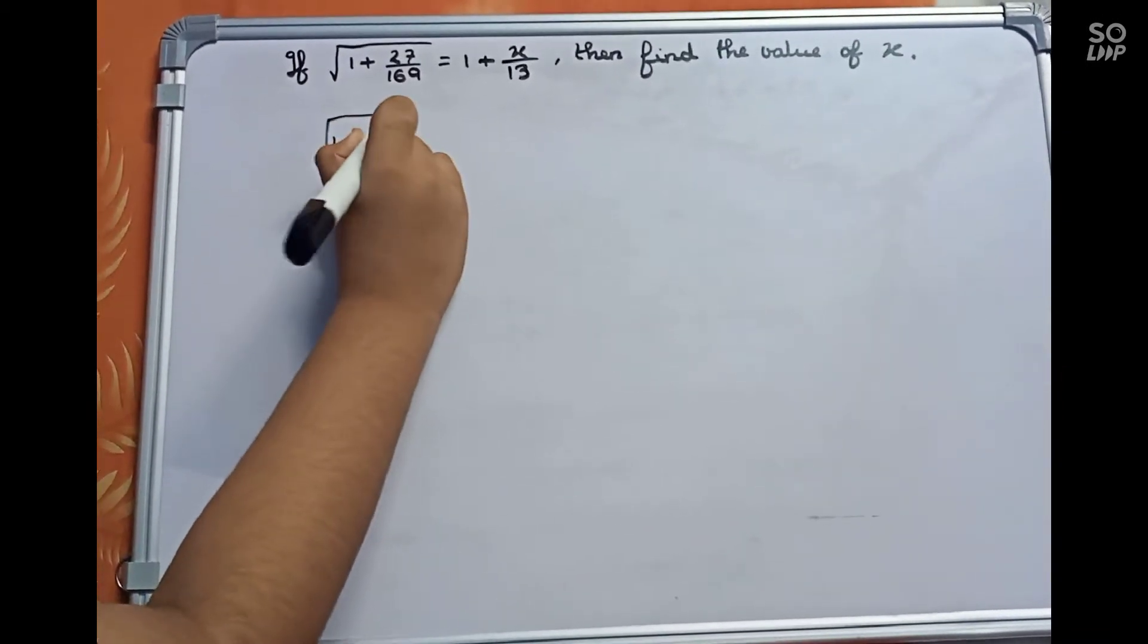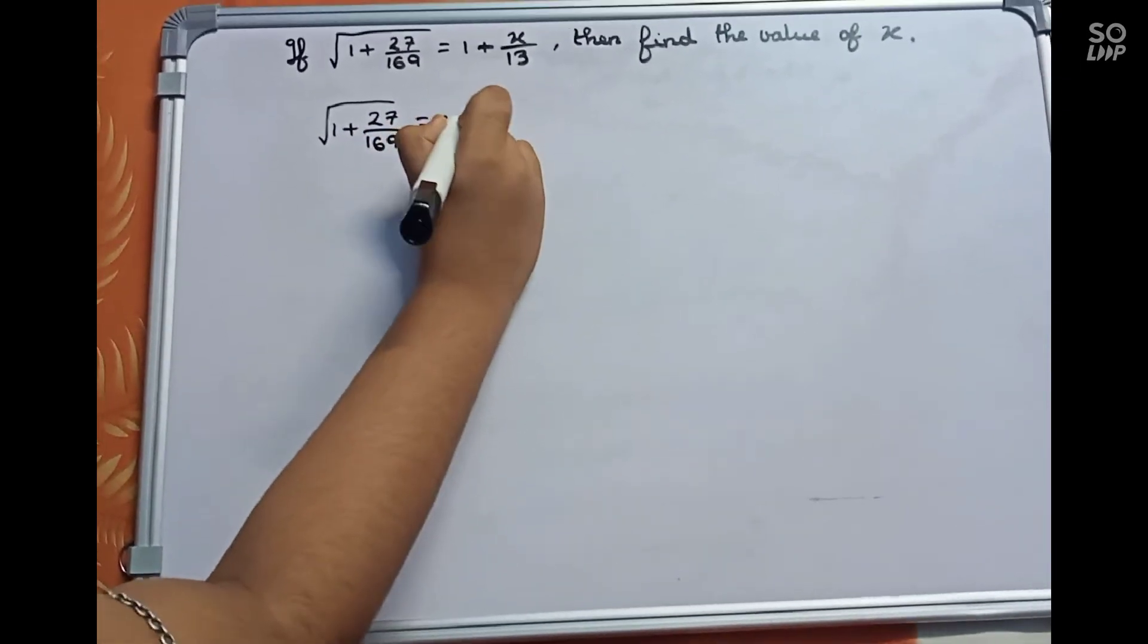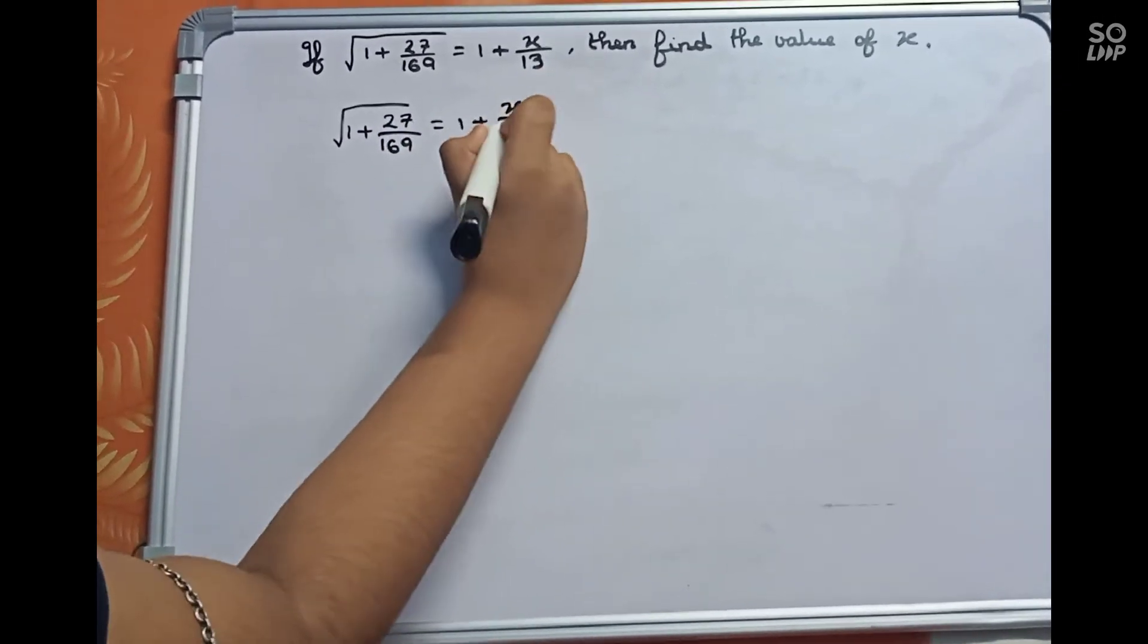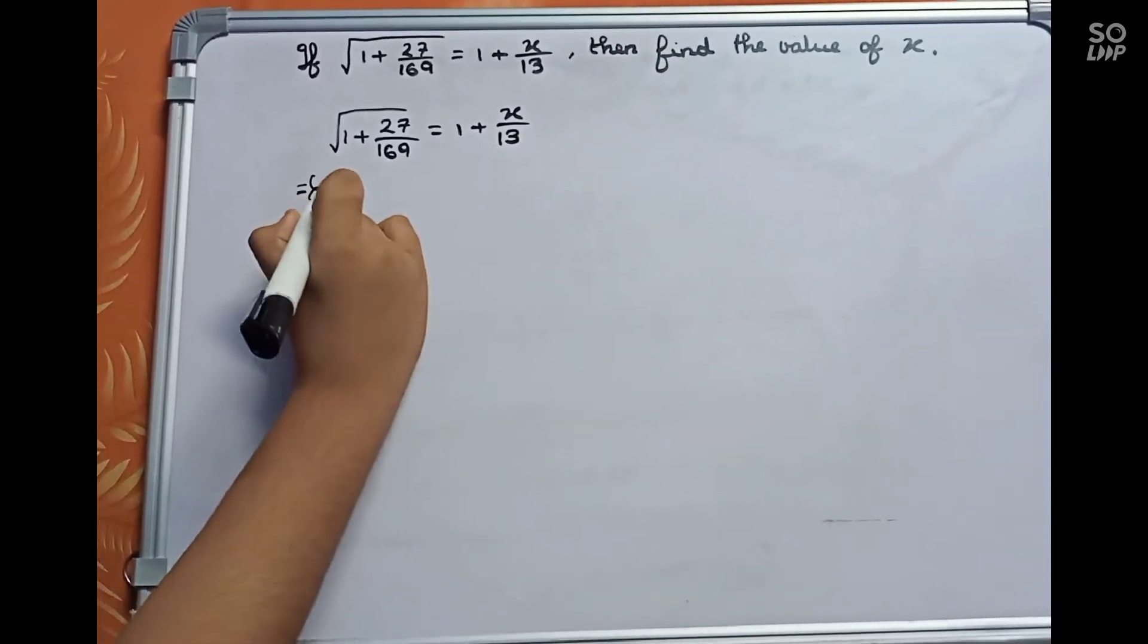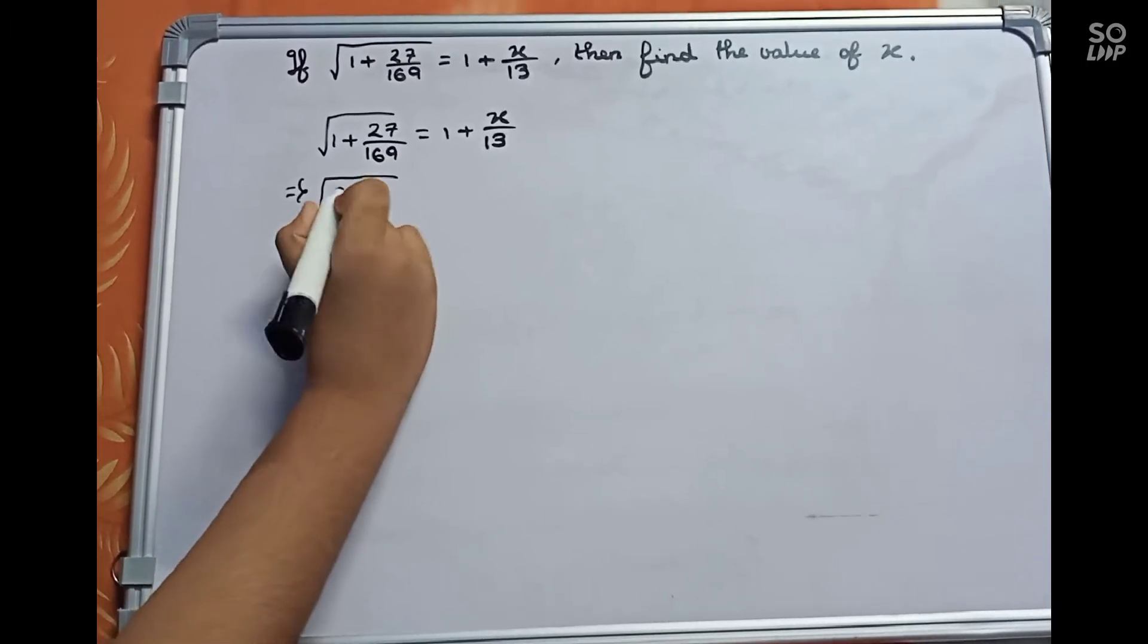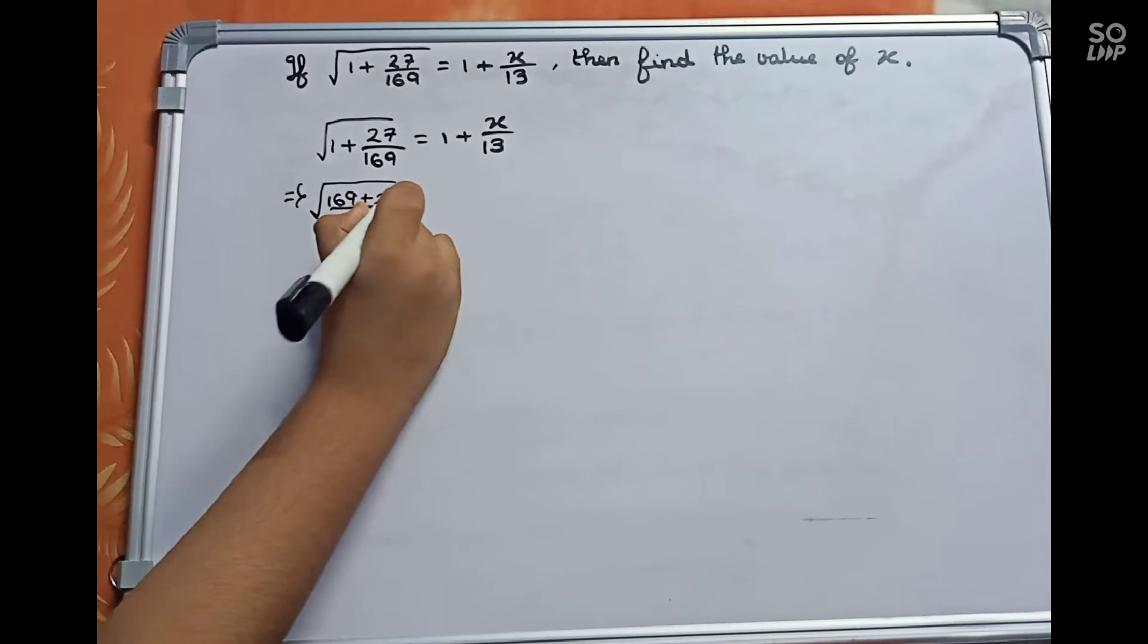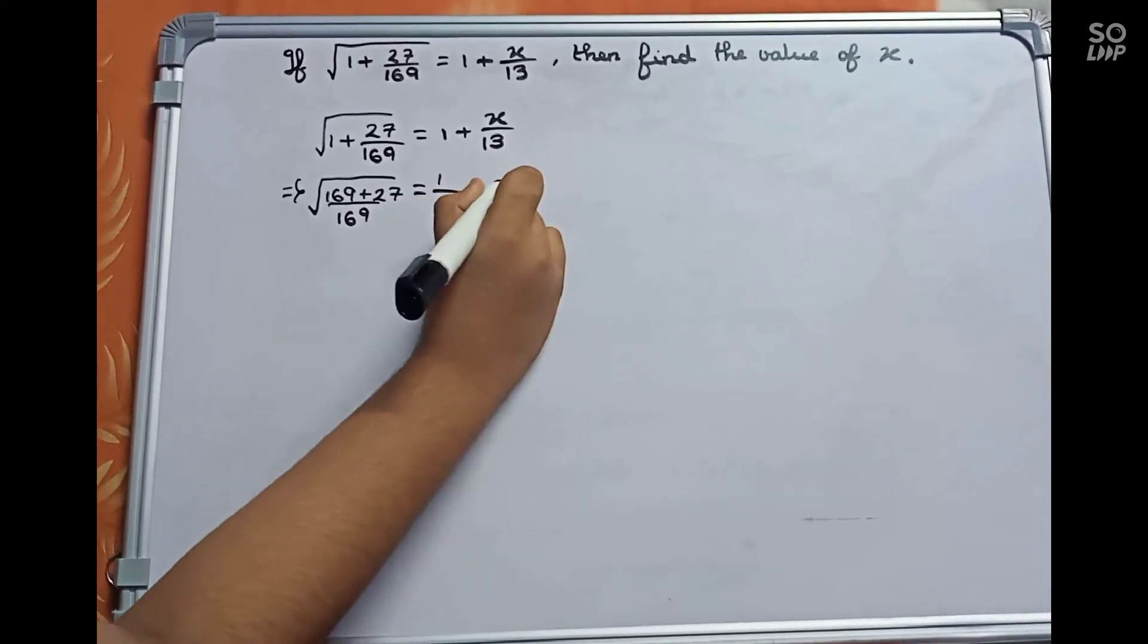It will be square root of 1 plus 27 by 169 equals to 1 plus x by 13. Now I will add the numbers. It will become square root of 169 plus 27 over 169, which equals 1 plus x by 13.